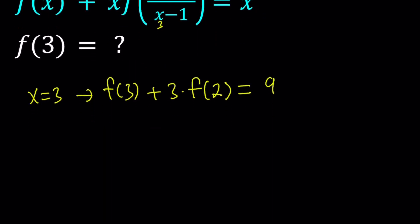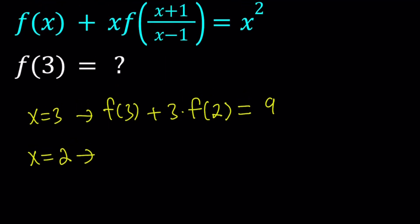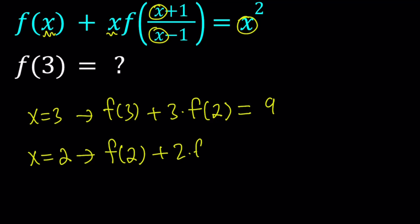So I got an equation. I'm trying to find f of 3 but I also have to deal with f of 2. So why not replace x with 2? If you do that you're going to get a similar equation but slightly different. You're going to get f of 2 plus 2 times f of 2 plus 1 divided by 2 minus 1. 2 plus 1 is 3 divided by 1, which gives you f of 3. And on the right hand side you get x squared which is 4.